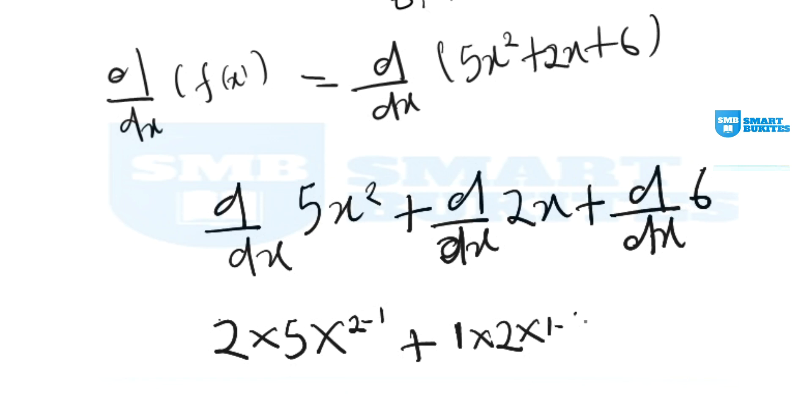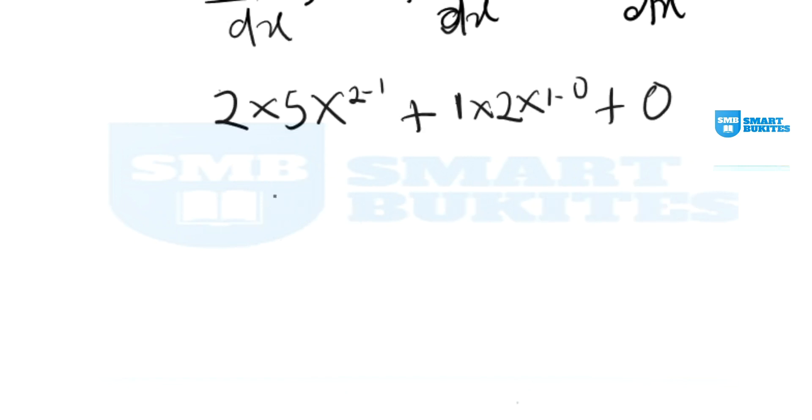And we know the derivative of a constant function is 0, so we say plus 0. And now the derivatives become 2 times 5 which is 10, so 10x + 2.